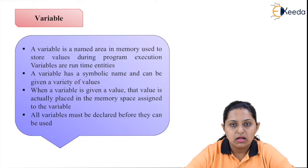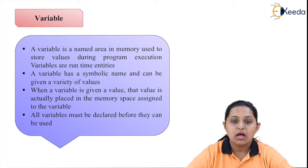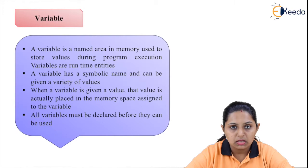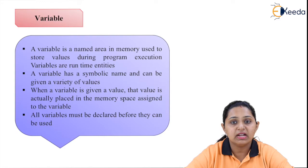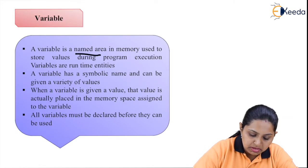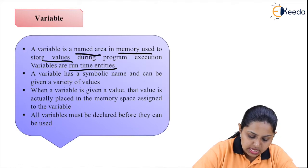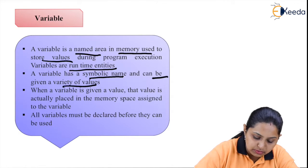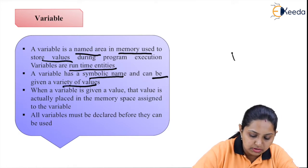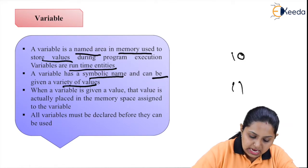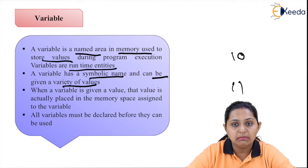Next topic is variables. Variable means a name given to the memory location. Whatever data you are storing in the memory location, you access that data with the help of that name, and that name is called a variable. A variable is a named area in memory used to store a value during program execution. Variables are runtime entities and have a symbolic name and can hold a variety of values — if you store 10 the first time, you can vary it to 11 the next time. That's why the name of that memory location is called a variable.